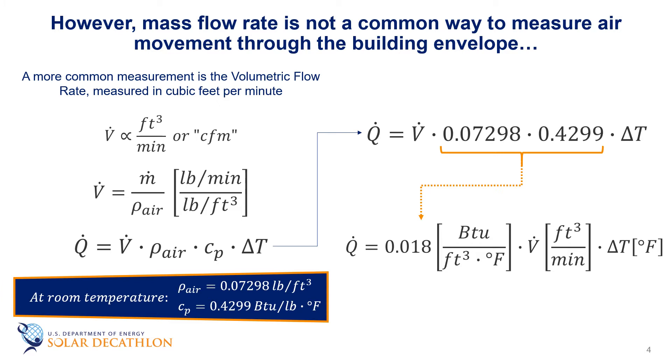This ΔT is the temperature difference required to heat the outside air to the comfortable inside temperature. Notice that the 0.018 has units, which are BTUs per cubic foot degree Fahrenheit. If you're working in the metric system, you'll end up with a different constant in a different set of units.